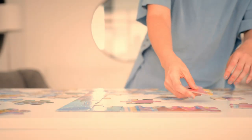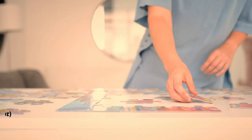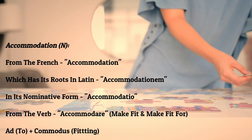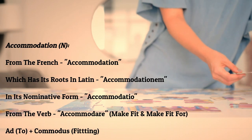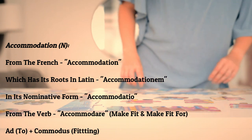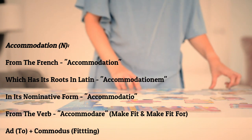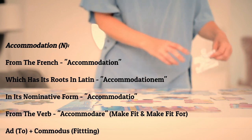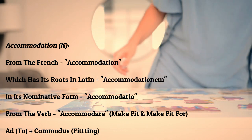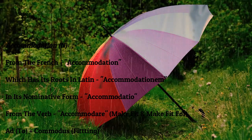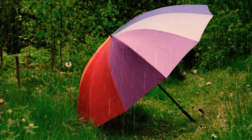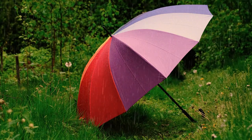Accommodation came into use in the 1600s from the French accommodation, which has its roots in the Latin accommodationem — specifically in its nominative form accommodatio. This Latin word comes from the verb accommodare, meaning 'make fit' and 'make fit for,' combining 'ad' meaning 'to' with 'commodities' meaning 'fitting.'